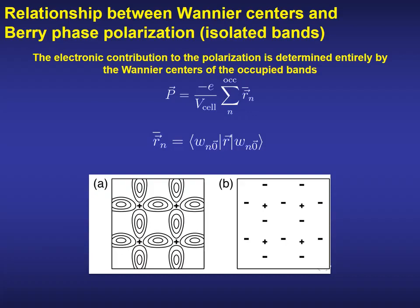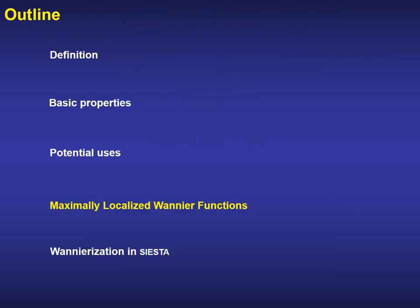The second use of the Wannier functions came from the relationship between the Wannier centers and the modern theory of polarization. The center of the Wannier functions can be computed from the diagonal matrix elements of the position operator, and then the electronic contribution to the polarization can be completely determined from them. This operation can be considered as a matching of a distributed charge density to a localized set of classical charges located at the center of the Wanniers.